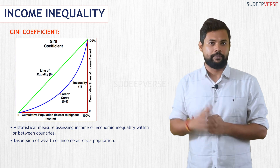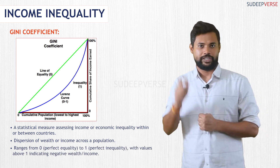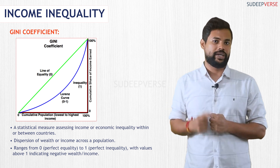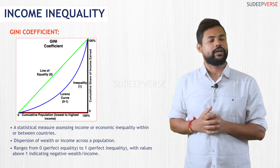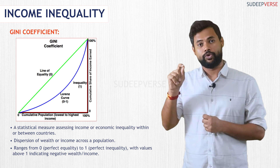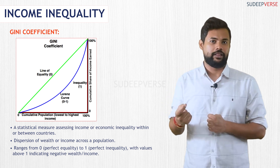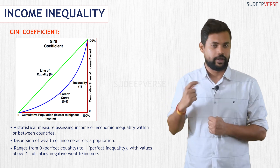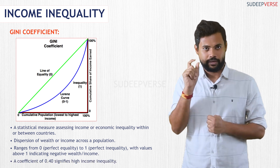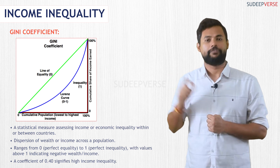Now if you look at the diagram, if the Gini coefficient is 0 then it shows perfect equality, and if it is 1 it shows perfect inequality. The coefficient can also sometimes exceed 1, which signifies negative wealth or negative income. However, 0.40 is the indicator of high income inequality for the Gini coefficient.